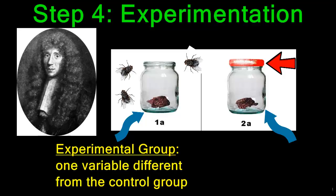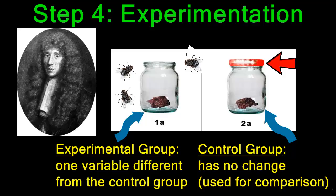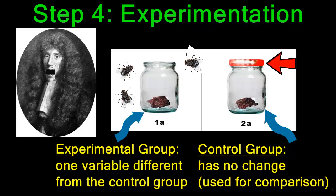The control group, which is the jar that has the lid, is used as a comparison. It does not allow the flies to get to the meat. This way, Francesco Redi would be able to discern whether or not the maggots in the meat were coming from the flies or from the meat. Haha! This will prove that I am right!